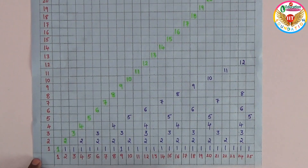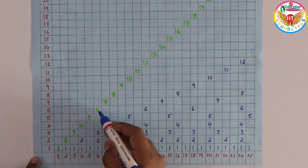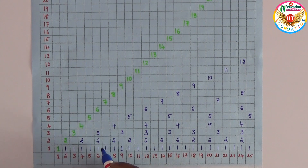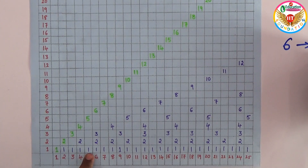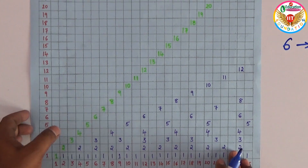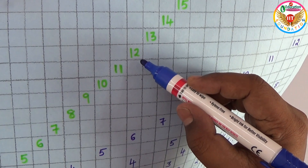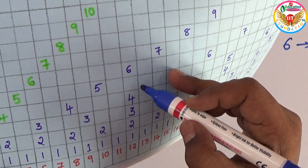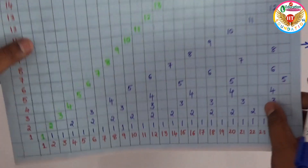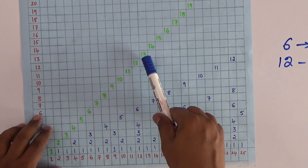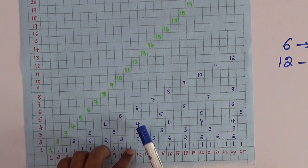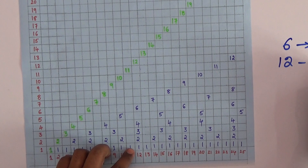Now you can verify the multiples and factors. For example, if I take the straight column of 6, the numbers in that column are 1, 2, 3 — so the factors of 6 are 1, 2, and 3. Now take number 12 — looking straight down the column of 12, the numbers are 6, 4, 3, 2, and 1, so the factors of 12 are 1, 2, 3, 4, and 6.